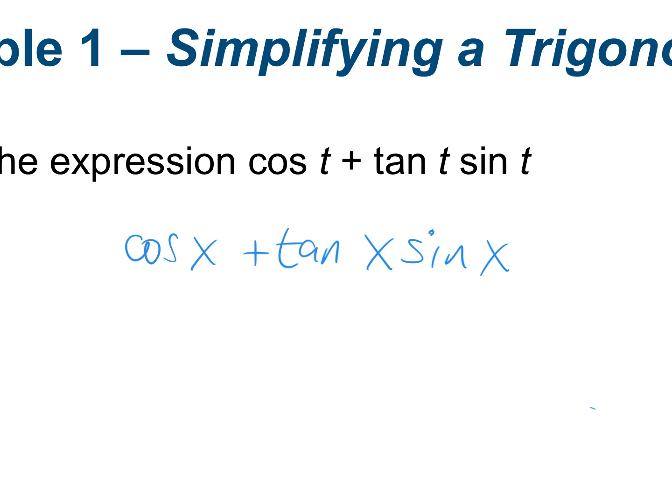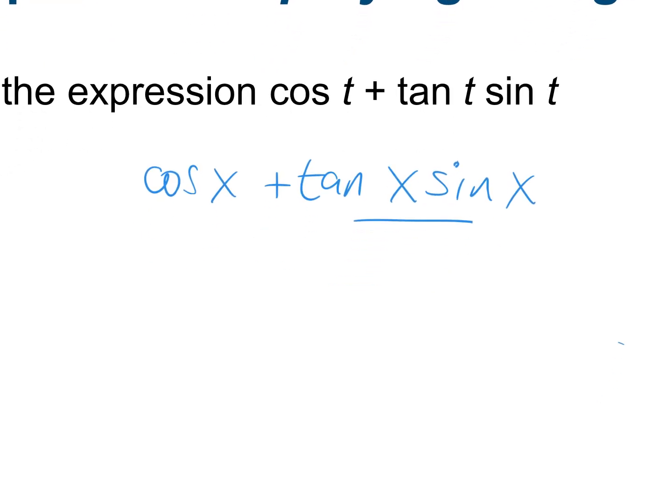Let's try to simplify cosine x plus tangent x times sine x. First thing I ask myself — with your identity sheet next to you — do you have anything that's squared attached to a plus or minus 1? No. So when all else fails, let's go through and change everything to sines and cosines.